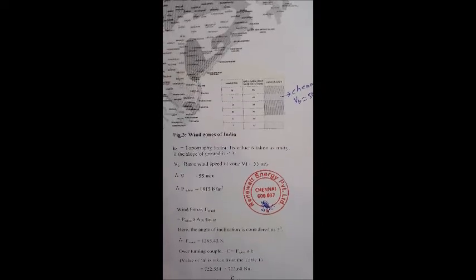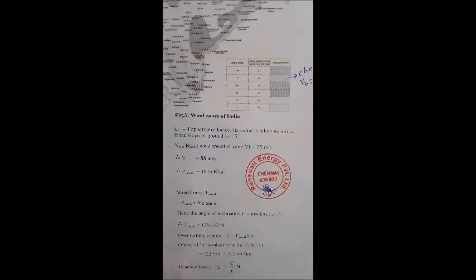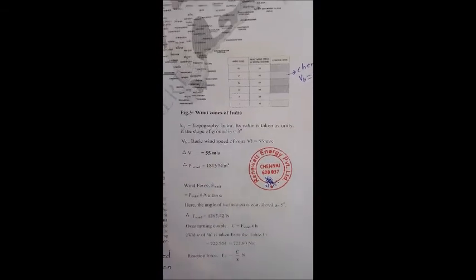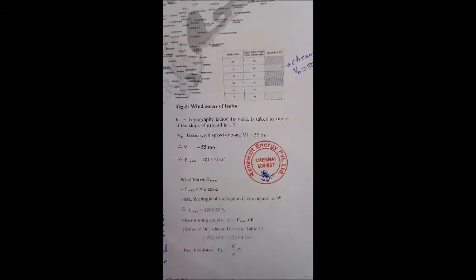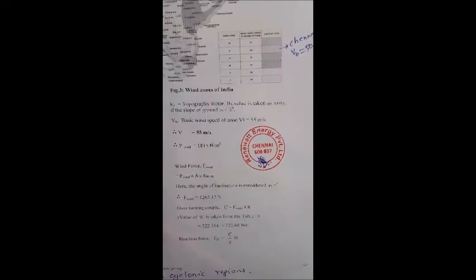K3 talks about the topography factor. Its value is taken as unity if the slope of the ground is less than 3 degrees. So basically, our slope is a flat roof. We have tested it. We have a 1 to 1.2 degree slope at the ground level. So this is taken as 1.